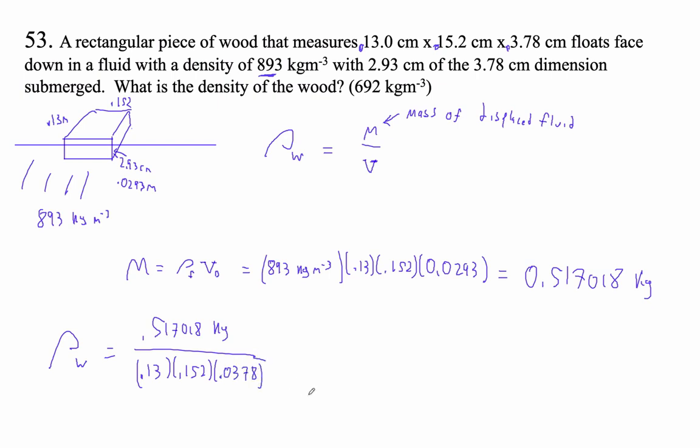All right, so divided by parentheses, 0.13 times 0.152 times 0.0378. And I get 692 kilograms per cubic meter.